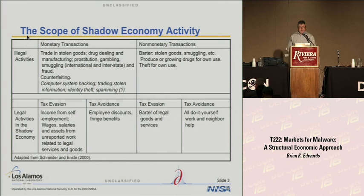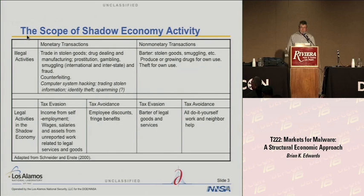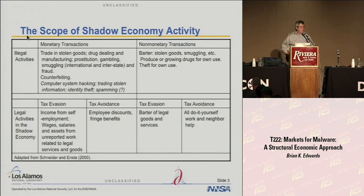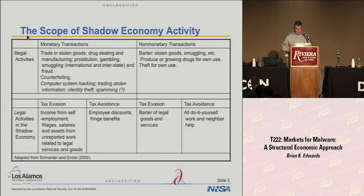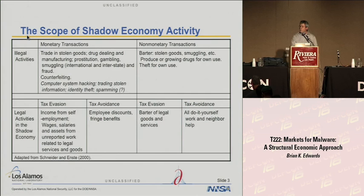There's an interesting anecdote: this article was published in the year 2000, and I actually had to add — if you go to the top left cell, where we have monetary transactions and illegal activities — that italicized piece is something I added. Because in the year 2000, hacking and the shadow information sector activities that people talk about now were not significant enough at that time to be included. The Journal of Economic Literature article gives you a pretty good overview of how economists look at illegal activities.